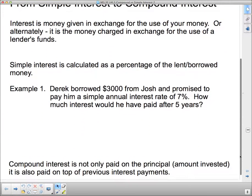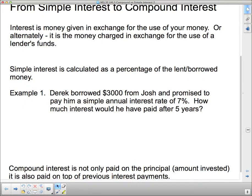So here's simple interest. Derek borrowed $3,000 from Josh and promised to pay him a simple annual interest of 7%. How much interest would he have paid after 5 years?